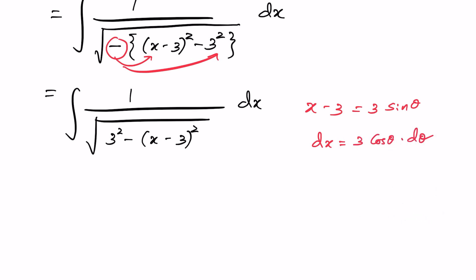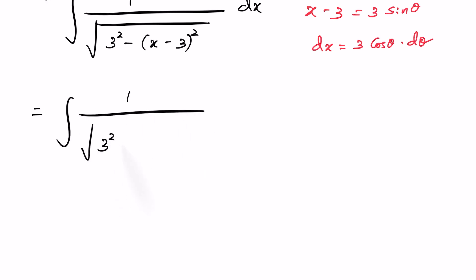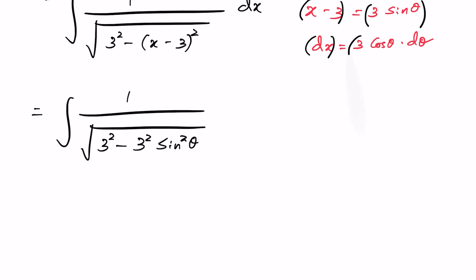Applying the substitution, the integral becomes 1 over square root of [3² − (3 sin θ)²] times 3 cos θ dθ, which equals the integral of 1 over square root of [3² − 3² sin² θ], times 3 cos θ dθ.